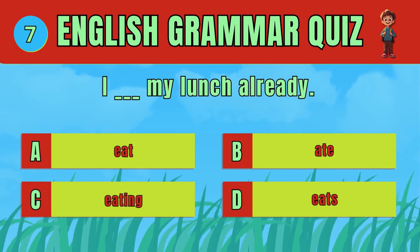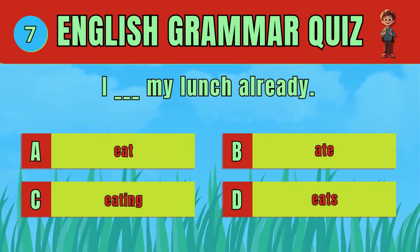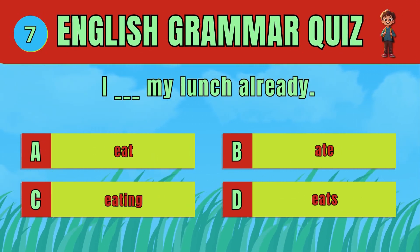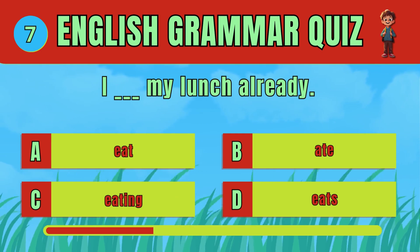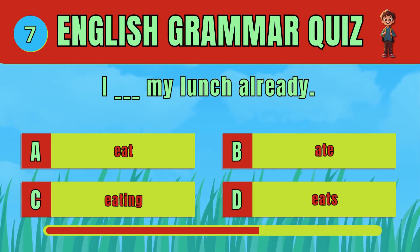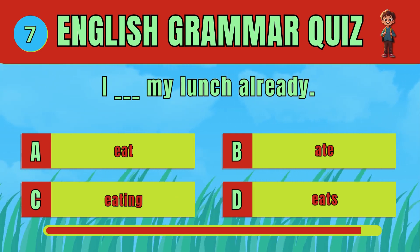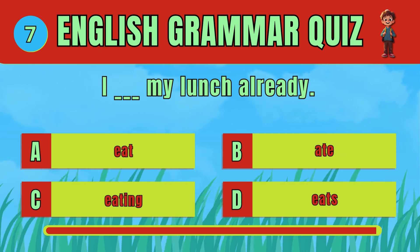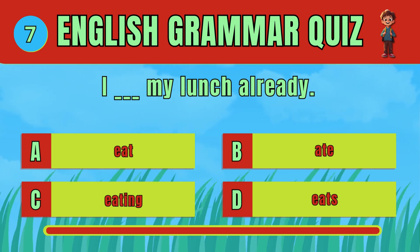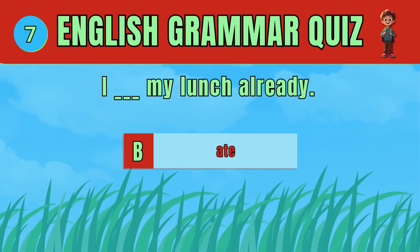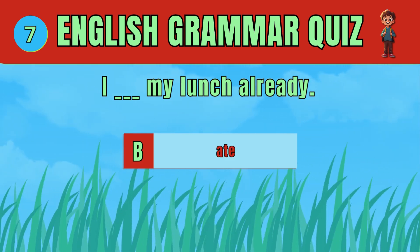Choose the correct verb form for a completed action. The answer is: ate. I ate my lunch already.